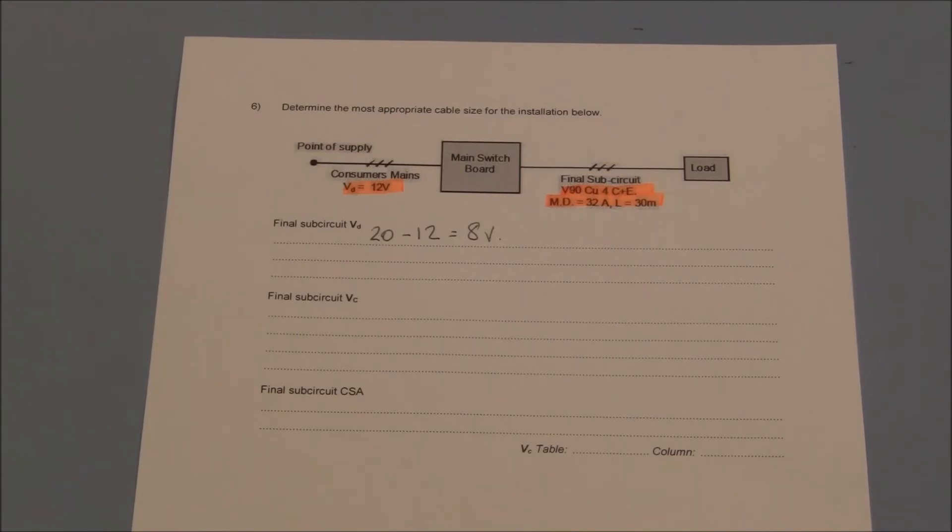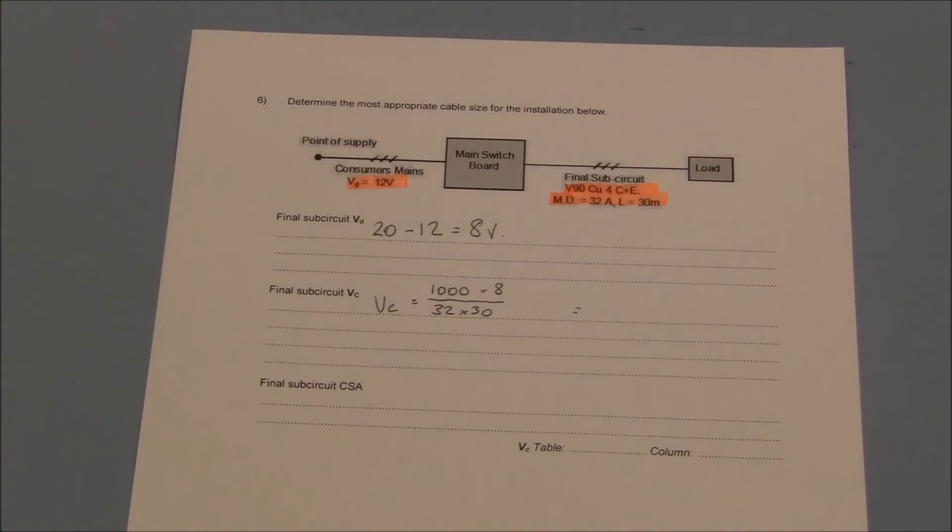The cable is a 4 core on earth with V90 installation with a circuit length of 30 metres and a maximum demand of 32 amperes. Populating our equation as such,